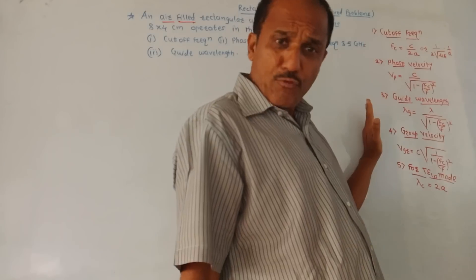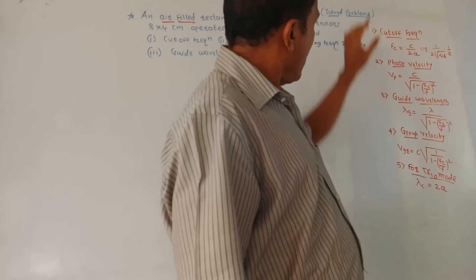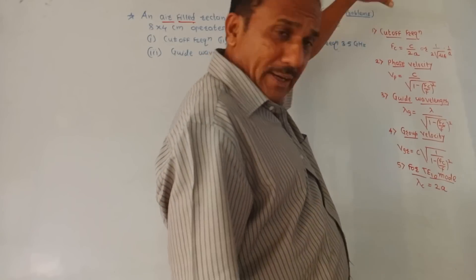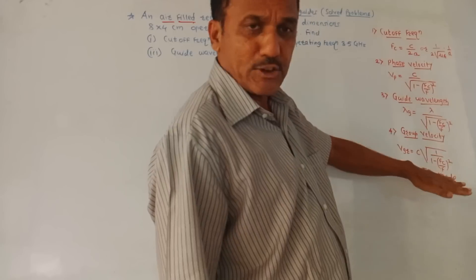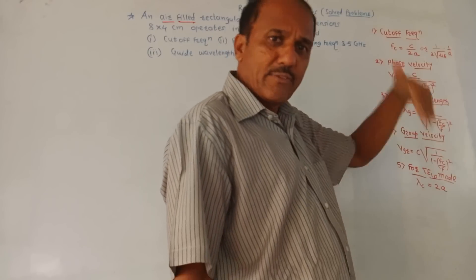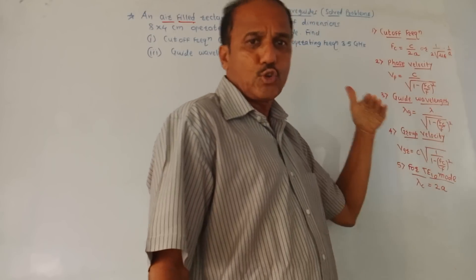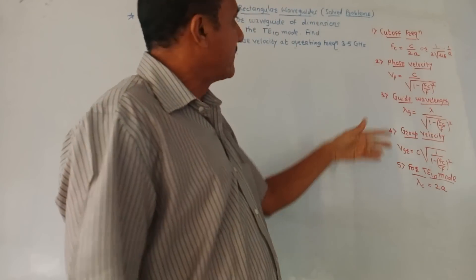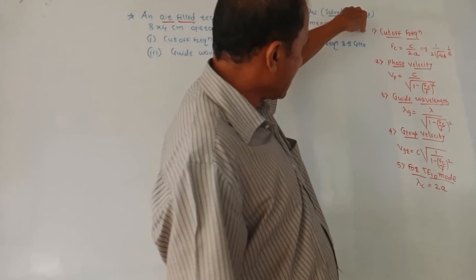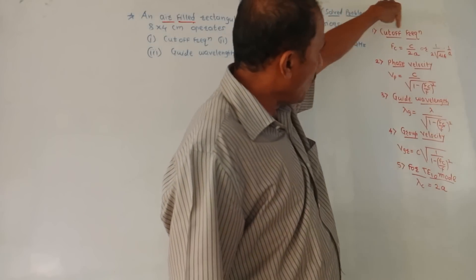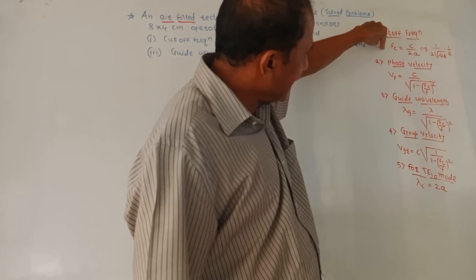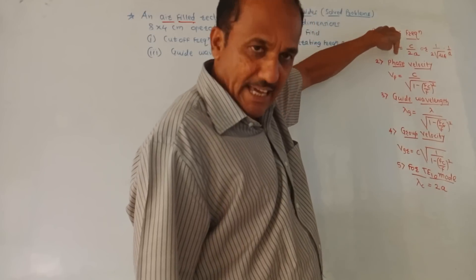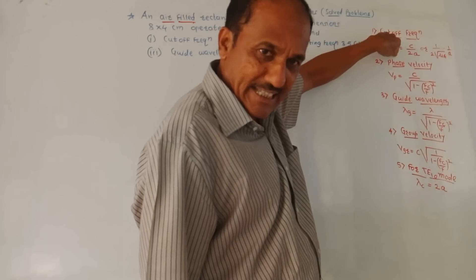I have made a list of formulae. So first, let me explain you what are these formulas and then we will discuss how to solve the numericals. So first is cutoff frequency. The notation is fc, f to the base c.